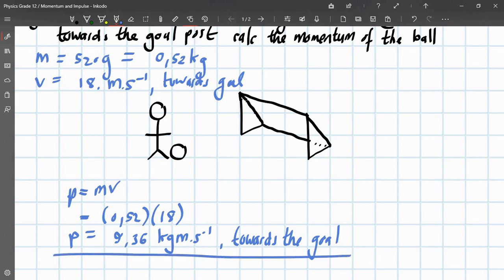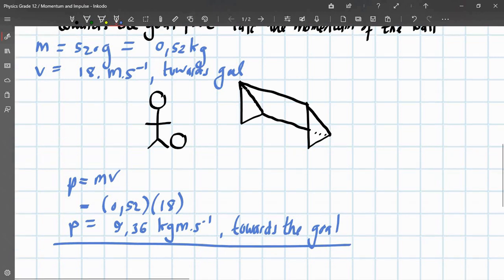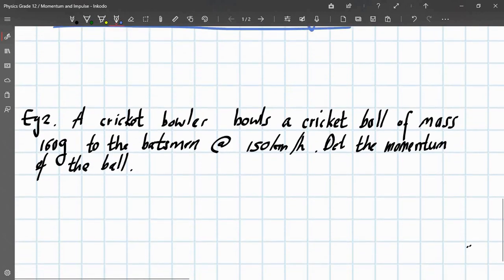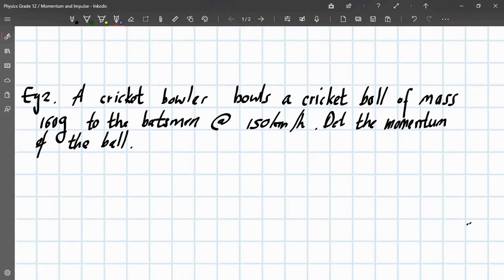So, it's quite straightforward. Just substitute. Make sure you have SI units. And make sure you have a direction. Or else it's not correct. Okay. We'll do another example for the mechanics again. We have a cricket bowler bowls a cricket ball of mass 160 grams to the batsman at 150 kilometers per hour. Determine the momentum of the ball.